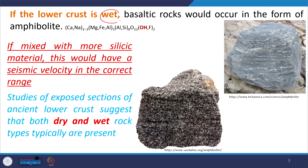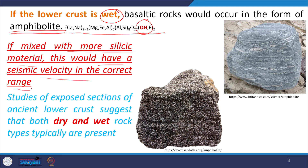So, though P wave velocity suggests basaltic composition, the mineral assemblage of basalt is unstable at that temperature and pressure. That means the lower crustal composition is something different. Now, if the lower crust is in wet condition, the basalt would have converted to amphibolite. If you see the amphibolite chemical composition, it contains water. Mixed with more silicic material, this would have a seismic velocity of the correct range.